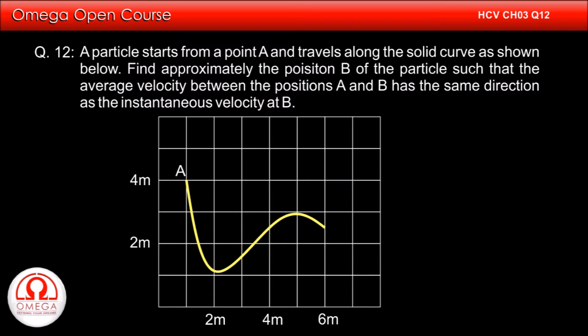If we assume B to be at the point shown by red dot, then the net displacement from A to B is along line AB. Since the displacement is along this line, the direction of the average velocity is also along this line.